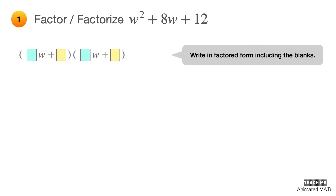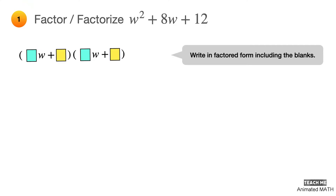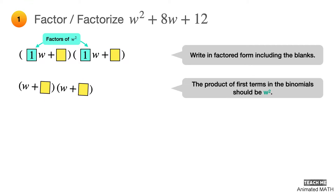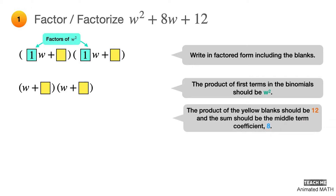Write the trinomial in factored form, and include the blanks that we'll fill out later on. There are two sign blanks for the coefficients and two yellow blanks for the constants. The product of the first terms in the binomials should be equal to w squared, which means that its coefficient is just the integer 1, and the only factors in this case are 1 and 1. Since we are factoring quadratic trinomials with leading coefficient 1, the coefficient of the first terms in the binomials will always be equal to 1. The integers that fill the yellow blanks should equal 12 when multiplied and equal the middle term coefficient 8 when added.